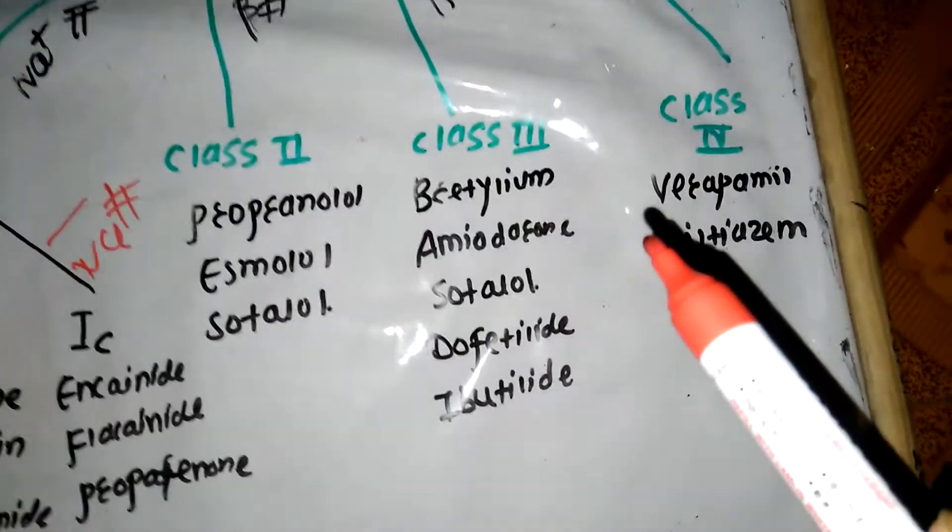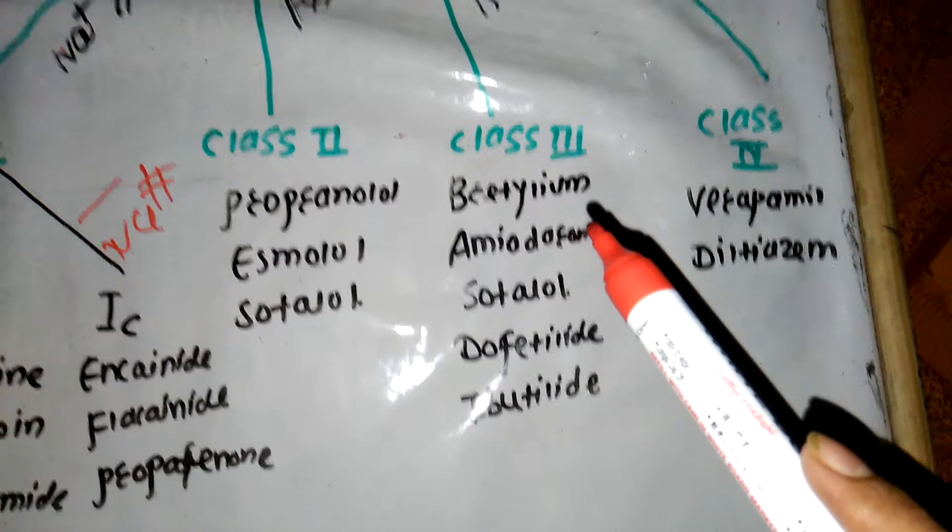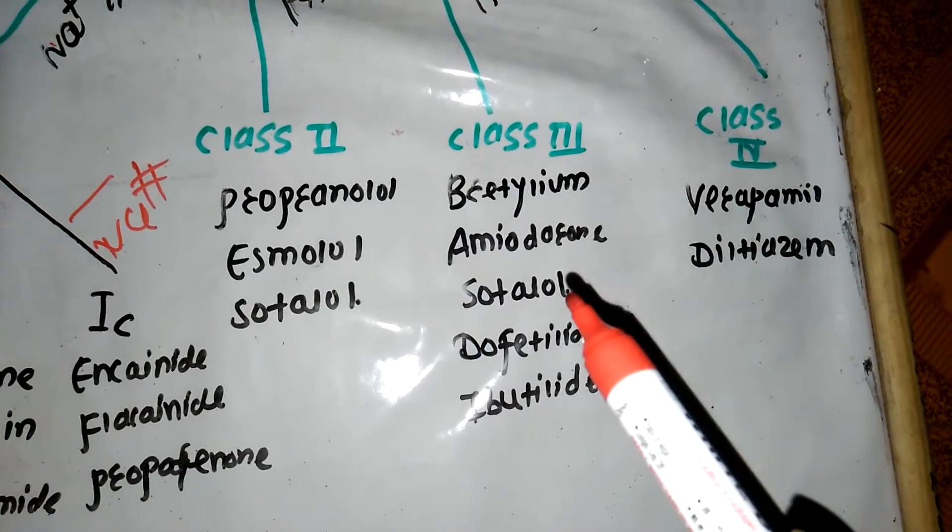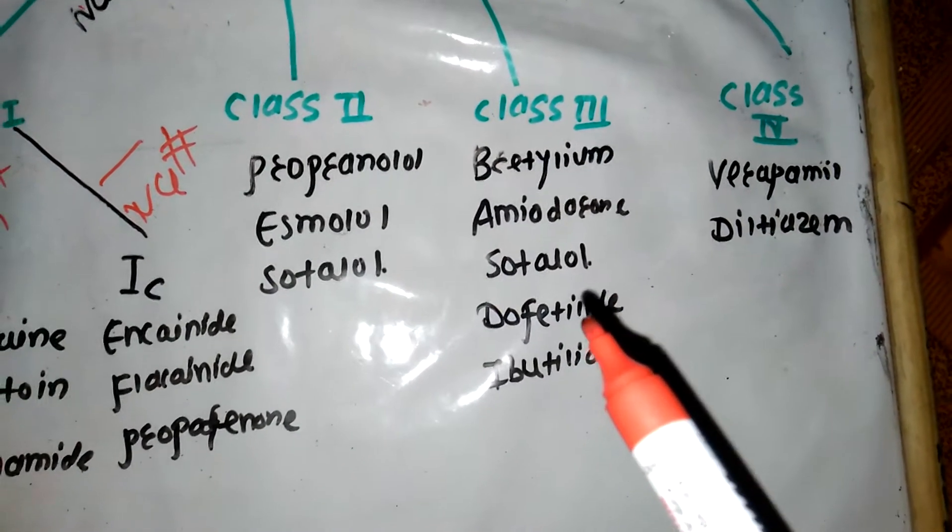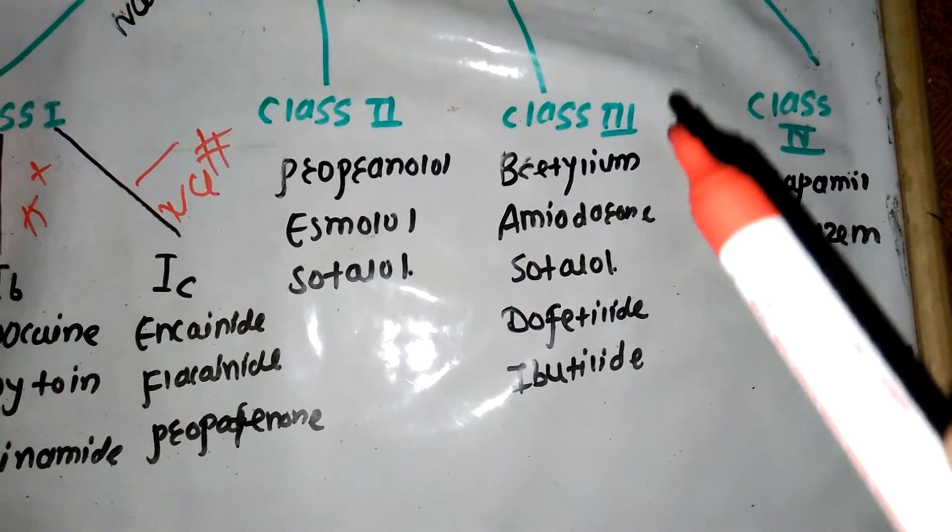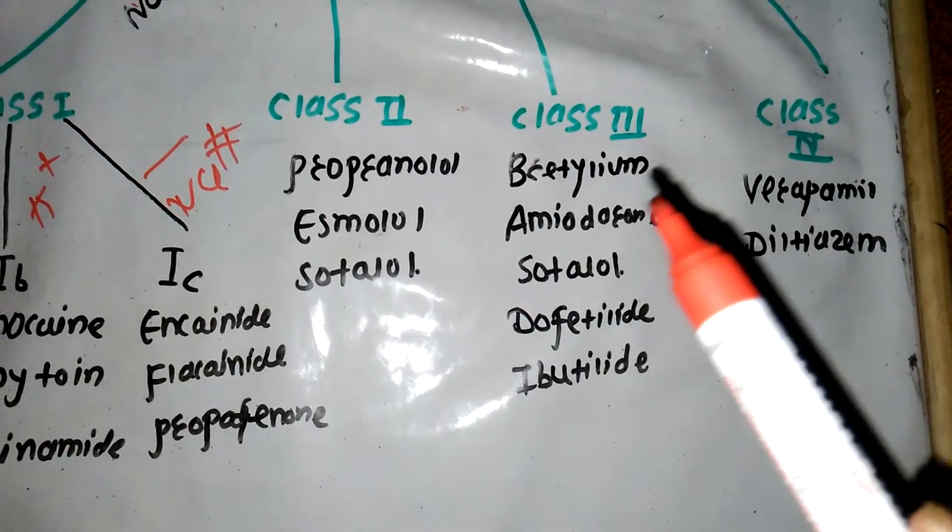After that, Class 3 - what comes in Class 3? Bretylium, amiodarone, sotalol, dofetilide, and ibutilide. So from Class 2, it went to Class 3.